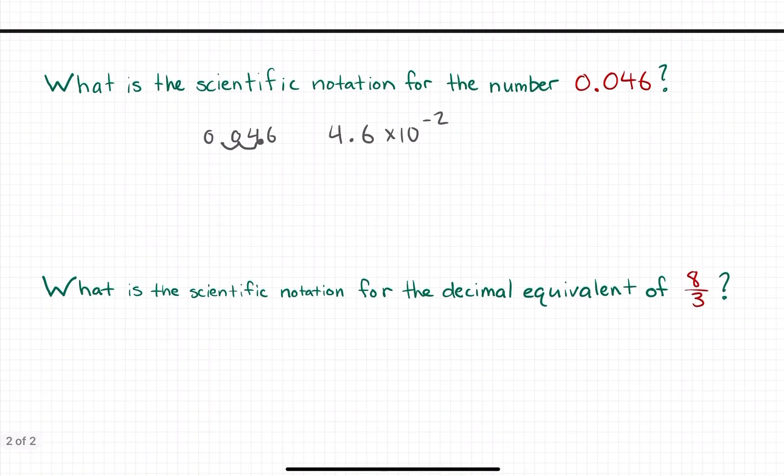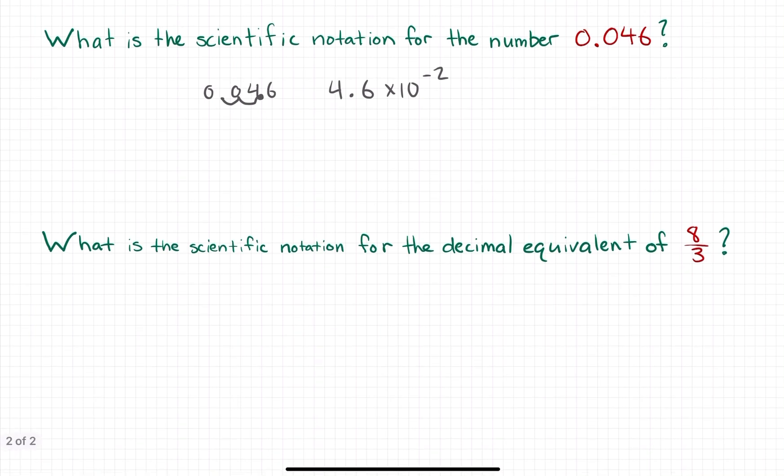Let's see a few examples because that's really the best way to get comfortable with scientific notation. Notice that for this first question, what is the scientific notation for the number 0.046? I've already written the number again, 0.046, and I show that I moved the decimal two place values to the right to create the number 4.6.